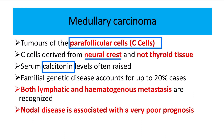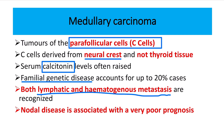There is also a familial genetic association, accounting for up to 20% of cases. Both lymphatic and hematogenous metastasis are usually present. When there is nodal disease — that means when it has metastasized to the lymph nodes — the prognosis is worsened.